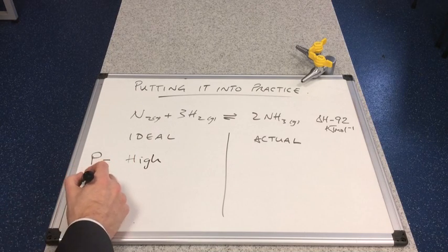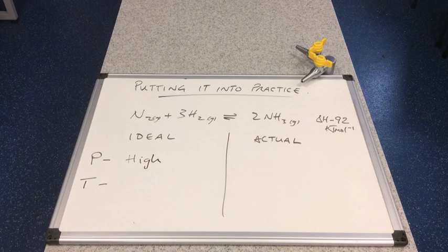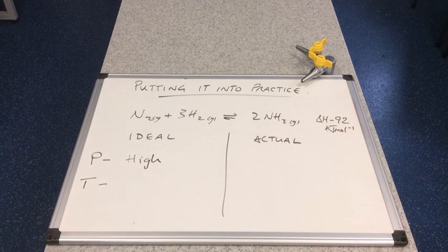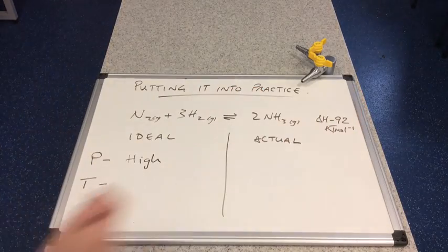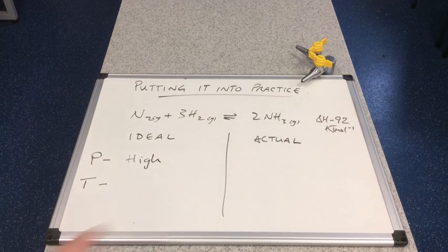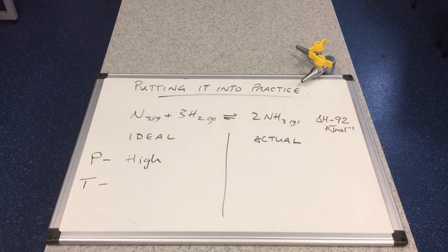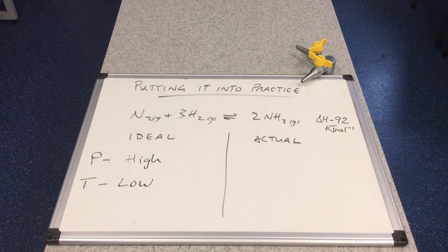If we look at temperature now, what kind of temperature will favor the exothermic reaction? Remember the forwards reaction is this enthalpy change here that's given. We can see that's negative. This is exothermic. So what kind of temperature? It's a low temperature would favor the exothermic process.